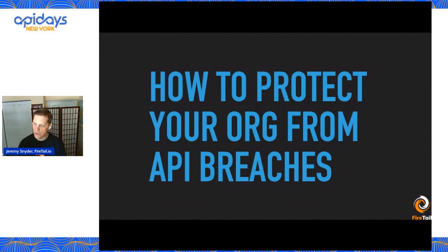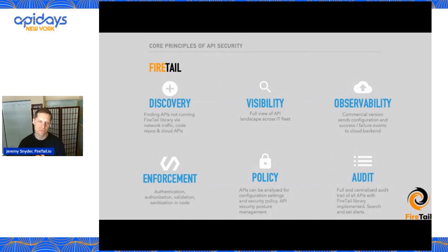You'll find the report on our website. As a closing thought: if you're thinking about starting an API security program at your organization, what we've summarized from our customer interactions is to start with discovery, visibility, and observability. If you don't know what you have, obviously you can't protect it.